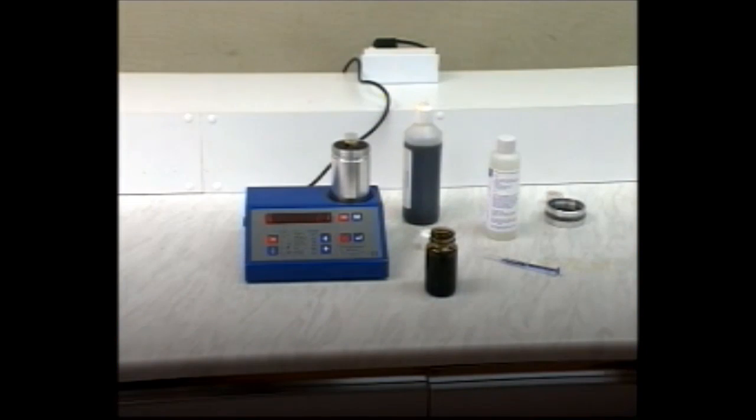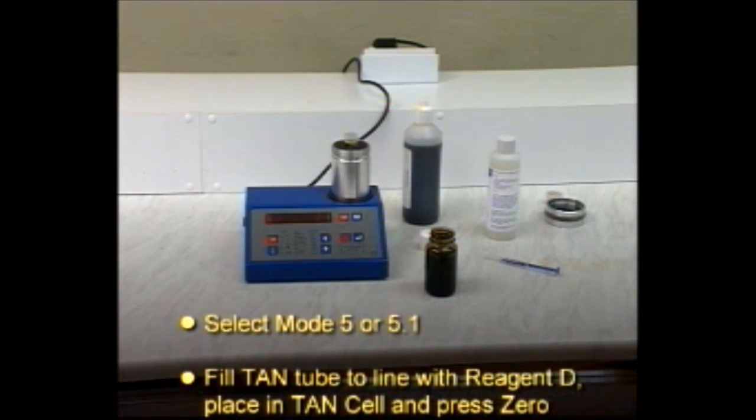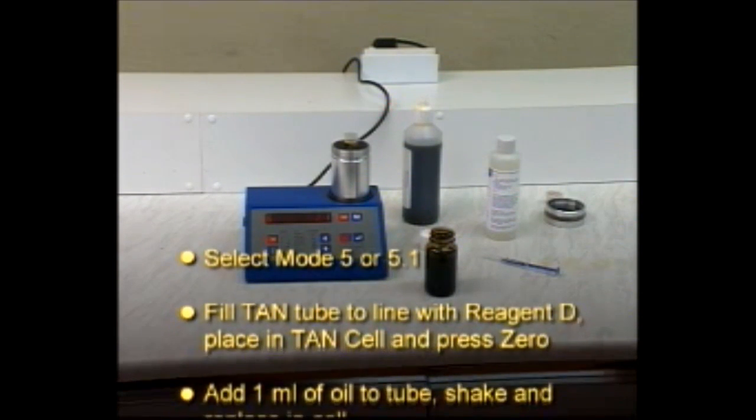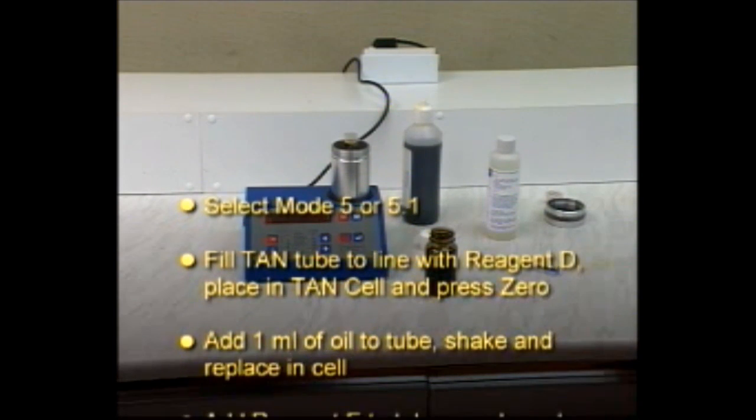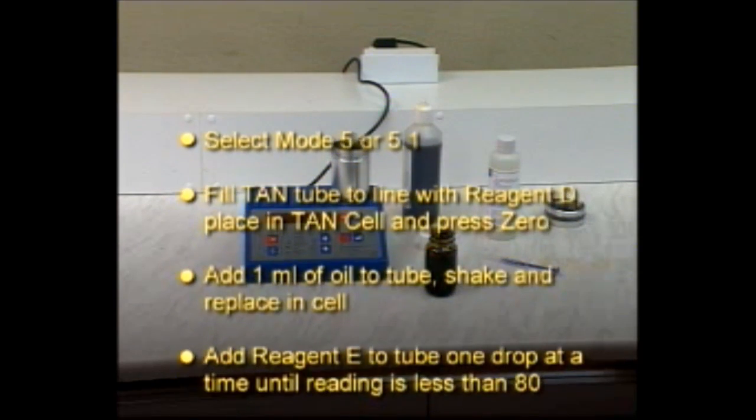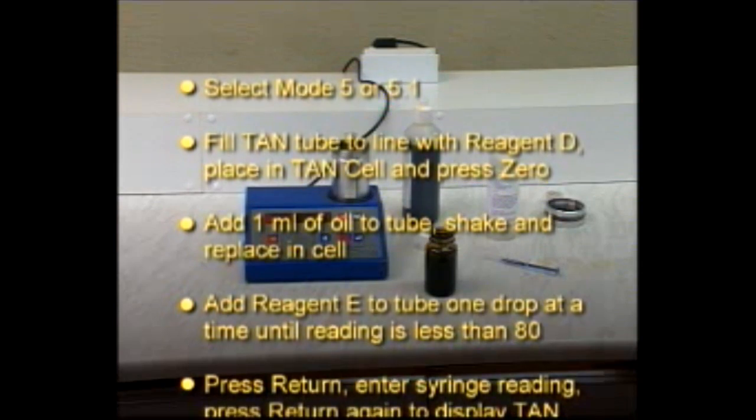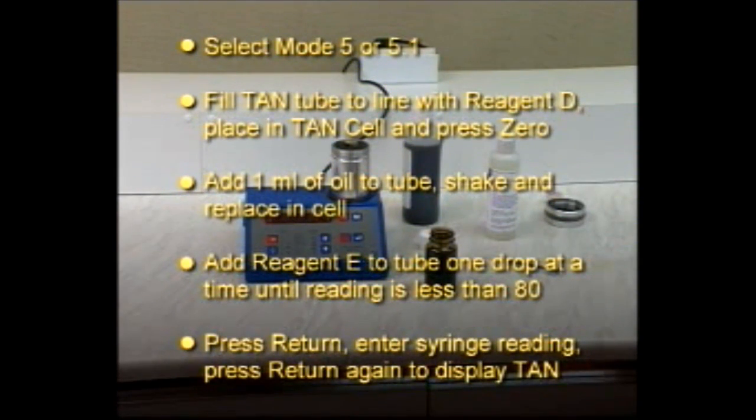To summarize, use mode 5 or 5.1. Fill the TAN tube to the line with reagent D. Place it in the TAN cell and press zero. Add one milliliter of oil to the tube. Shake well and replace it in the cell. Add reagent E to the tube one drop at a time until the reading is less than 80. Press return. Enter the syringe reading and press return again to display the TAN.